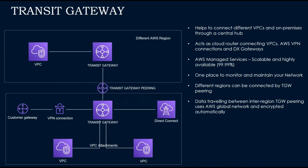Transit Gateway is a central hub which helps to connect different VPCs and on-premises data centers through VPN connection and Direct Connect, which acts as a cloud router between them. Before, if you wanted to add any new VPC, it had to be added as a VPC peering, which is more complex. Now, it can be easily connected to the Transit Gateway, which is highly scalable and highly available, and it is one place to monitor and maintain your network.